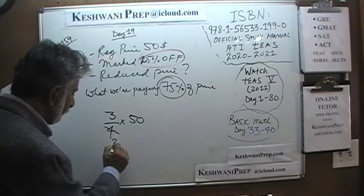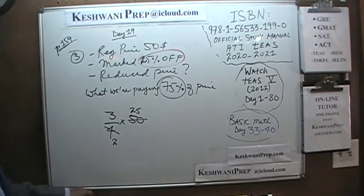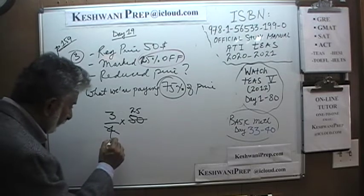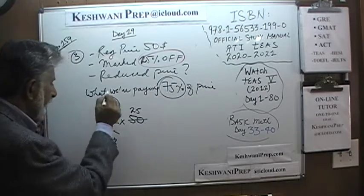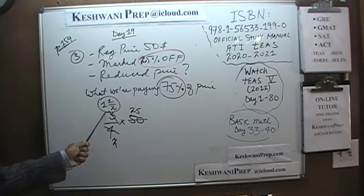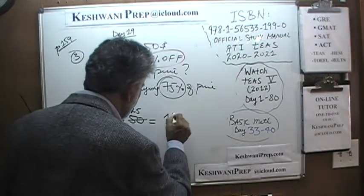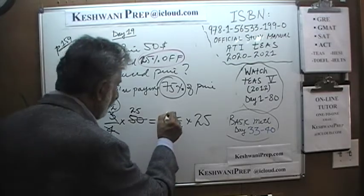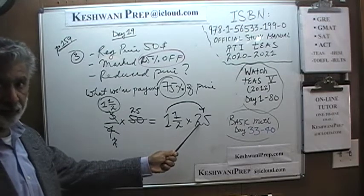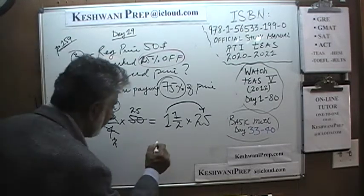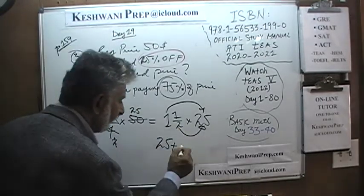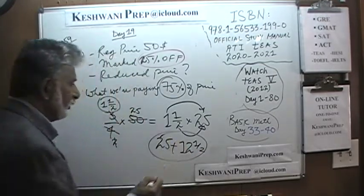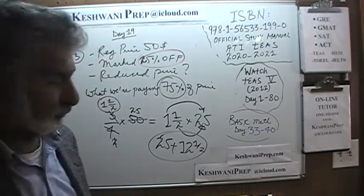Let's divide top and bottom by two again: two goes away and three becomes one and a half. All we have to figure out is one and a half times 25. One times 25 is 25 — that represents 50%. Half of 25 is 12.50 — that represents the other 25%. Together: 25 plus 12.50 is 37.50. Of course the answer doesn't change just because we used a different method — it's the exact same thing.